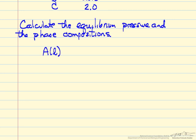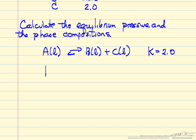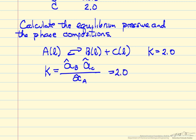The reaction that the equilibrium constant applies to is the liquid phase reaction. Remember the standard states refer to the pure liquids, so the equilibrium constant is the ratio of the thermodynamic activities — the activity of B times the activity of C divided by the activity of A — and this equals 2.0. Activities are dimensionless, so the equilibrium constant is dimensionless.